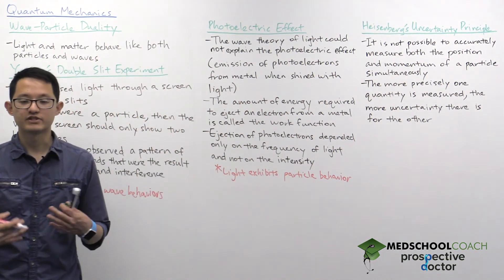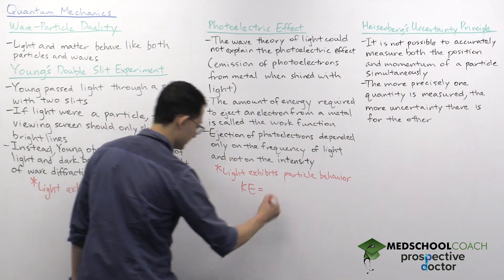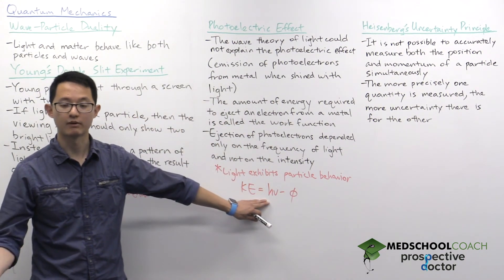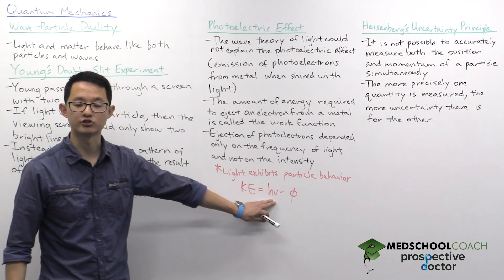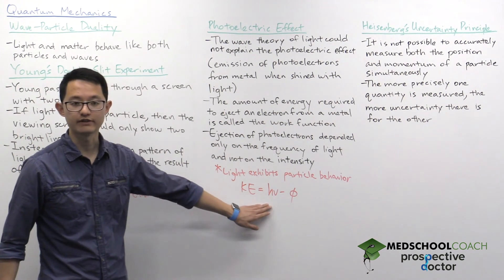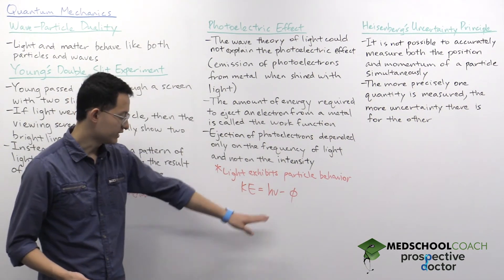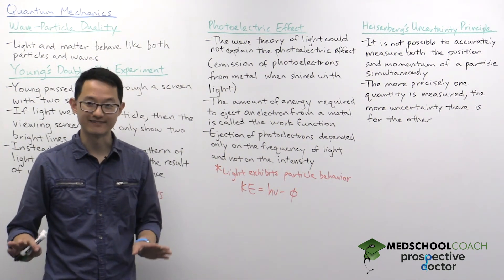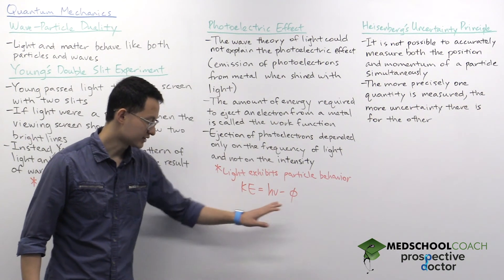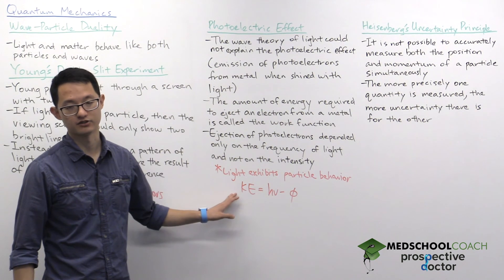Much of what we just discussed can be explained by the following equation: KE equals hv minus phi. Here, KE is the kinetic energy of the ejected photoelectron. hv is the energy of a photon, which is directly proportional to the frequency v of the photon, and phi is the work function. If you use light of low frequency where the photon energy is less than the work function, you can't eject any electrons. But if you increase the frequency until the photon energy exceeds the work function, you eject a photoelectron with kinetic energy. The greater the frequency, the greater the kinetic energy of the ejected photoelectron.